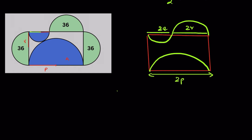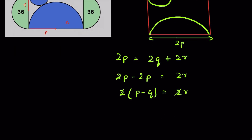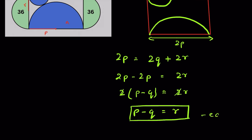Since it's a rectangle, that means 2P equals 2Q plus 2R, or we can write 2P minus 2Q equals 2R. Taking 2 as common, P minus Q equals R. Let this be equation 2.